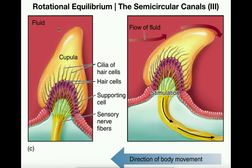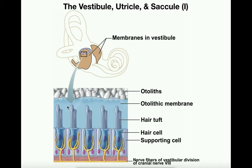Underneath the cupula we have a layer of cells — this tissue — and in this tissue we have hair cells, just like we did in the otolithic organs. These hair cells on one side have cilia; the cilia actually sit inside the cupula. On the other side we have axons, and these axons are ultimately going to converge with sensory nerve fibers that lead to the vestibular nerve. It's set up the same way as what we saw in the otolithic organs, except the structures are slightly different.